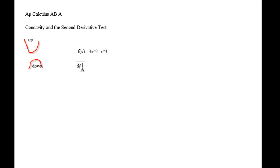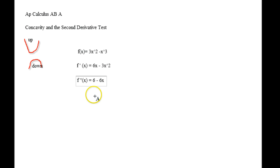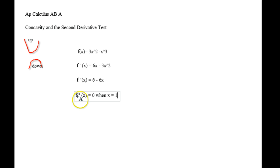If I take the first derivative, I get 6x minus 3x squared. Then I take the second derivative and I get 6 minus 6x. I also want to pay attention to when the second derivative equals zero, which gives us x equals 1.